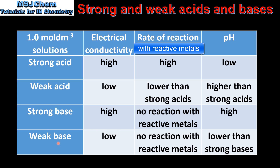A weak base has low electrical conductivity, no reaction with reactive metals, and a pH that's lower than a strong base. All these observations can be explained by the fact that strong acids and strong bases completely ionize in solution, whereas weak acids and weak bases only partially ionize in solution.